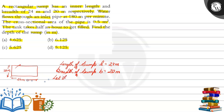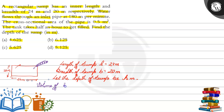तो यहाँ पर हम लेते हैं: Let the depth of sump be small h meter. अब क्या होगा? जो भी volume of water pipe से outlet होगा, वही tank में जाके fill होगा। तो यहाँ पर हम लिख सकते हैं: volume of water must be equal to volume of tank, क्योंकि जब pipe से water निकलेगा तो यह tank में fill हो जाएगा।